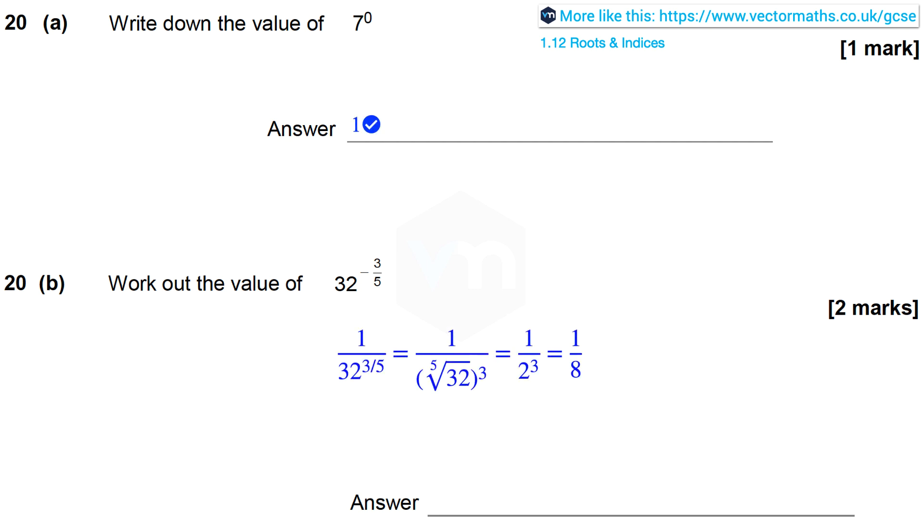In part b, to work out the value of 32 to the power of minus 3 fifths, I recall that this is the same as 1 over 32 to the power of positive 3 fifths. And this is defined to be equal to 1 over the fifth root of 32 raised to the power 3.